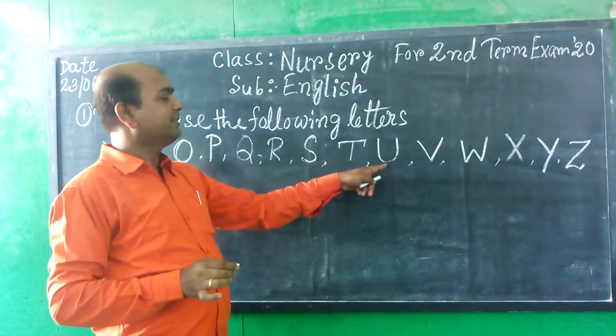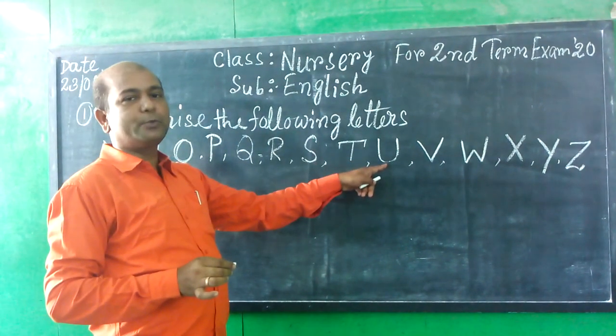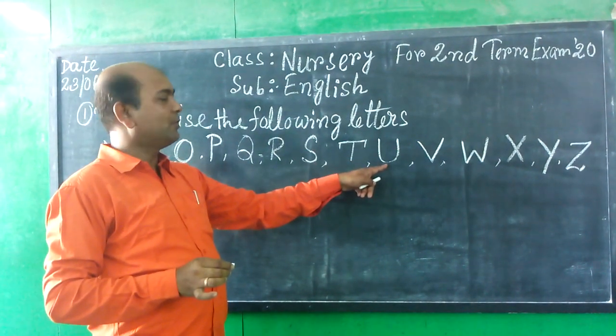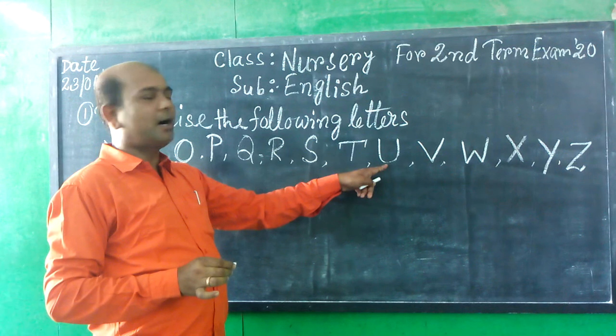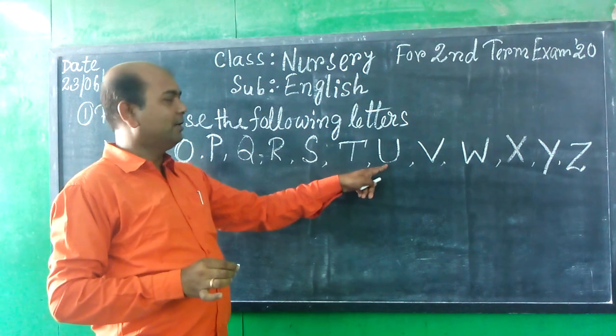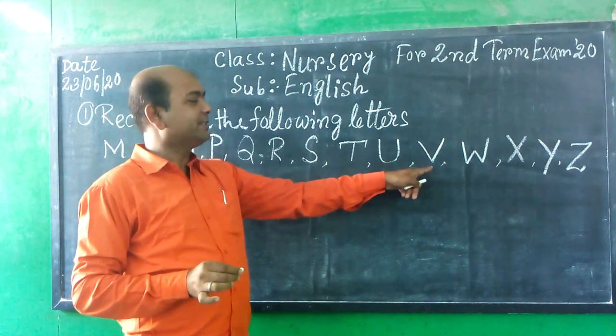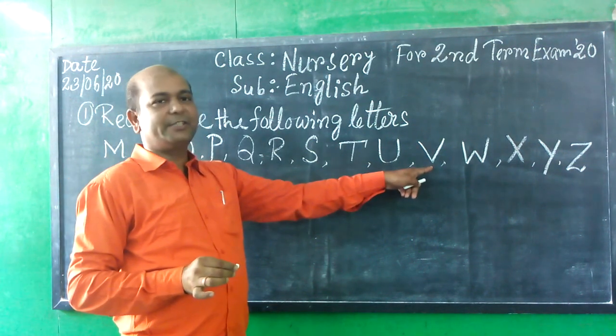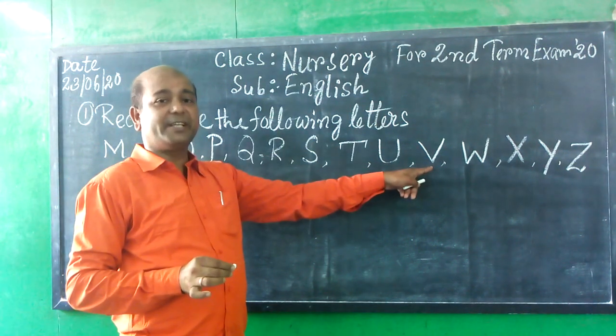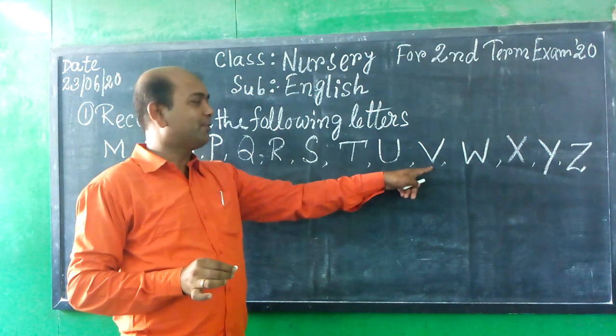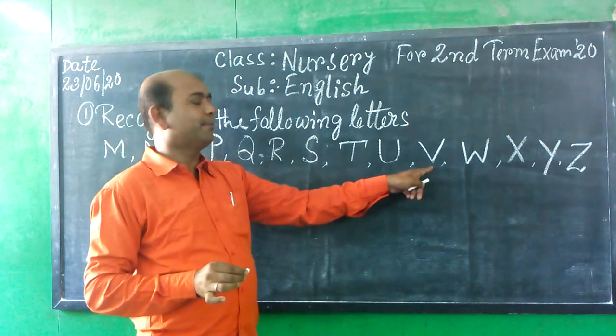What is it? It is U. U for Umbrella. What is it? It is V. V for Van.